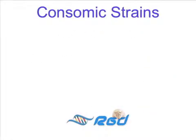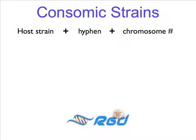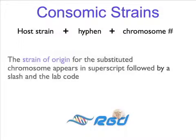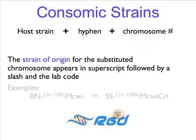The symbols for conzomic strains start with the host strain, a hyphen, then the number of the substituted chromosome. The strain of origin for the substituted chromosome appears in superscript, followed by a slash, then the ILR code.